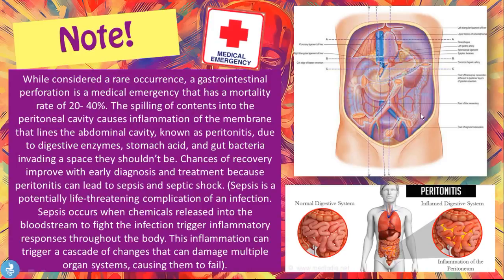The peritoneum is a cover that covers all these organs and keeps them intact within the abdominal cavity. When we have leaking from the stomach, the small intestine, the large intestine, or anywhere that's perforated, the contents leak into the peritoneal cavity. Between the peritoneum and the abdominal viscera there is a potential space, and all the content from the perforated organ leaks into this cavity, leading to the development of peritonitis.